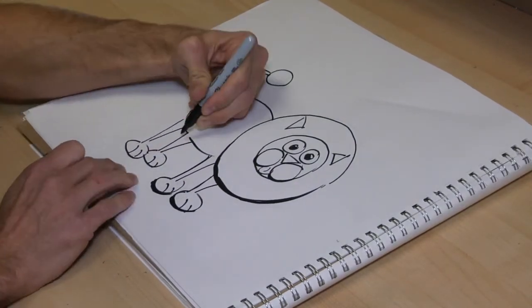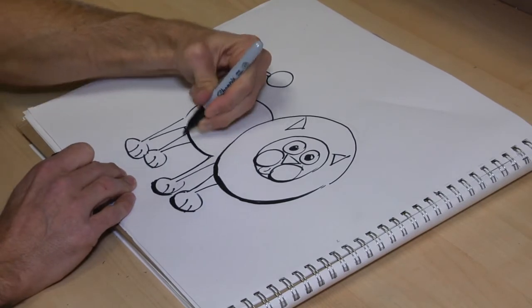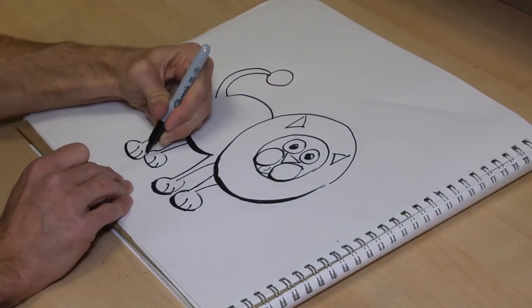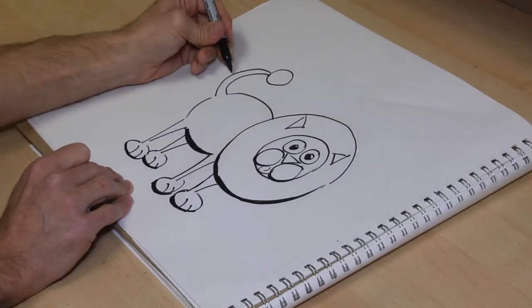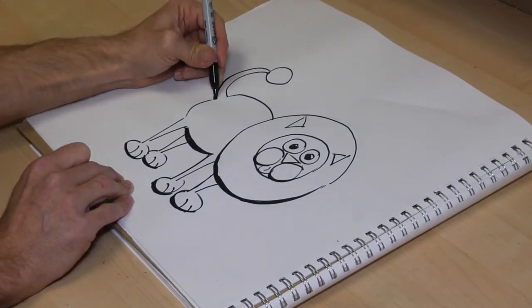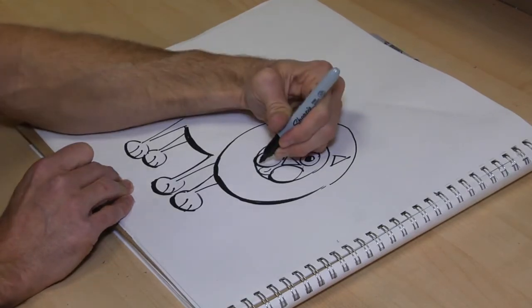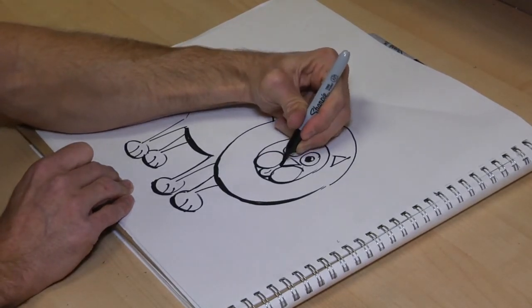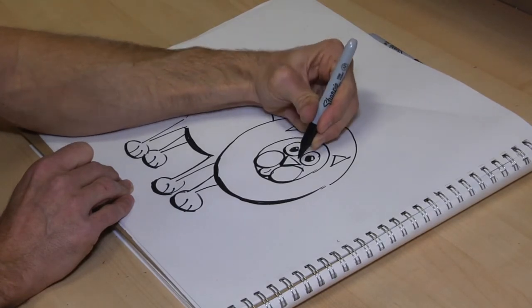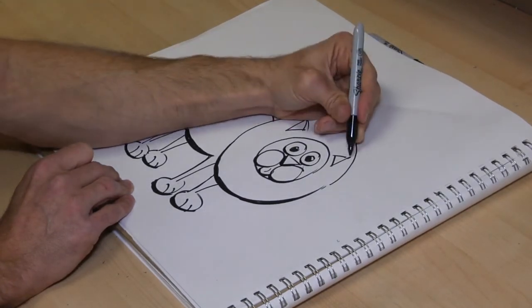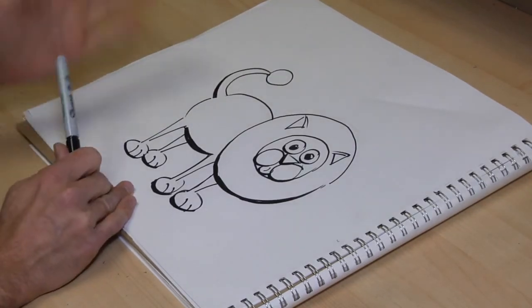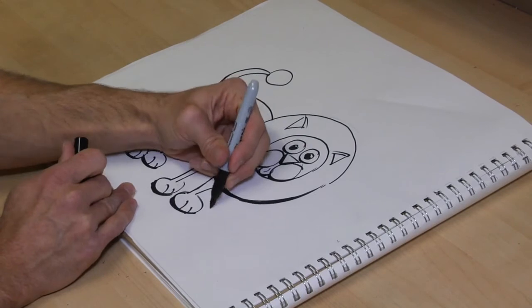That kind of grounds the figure to the paper. It gives it a little bit of weight. Just the underside. You can kind of see how it's starting to get a little bit more weight to it. And that's a real simplified bold line art drawing. And that's how you draw dark line art.